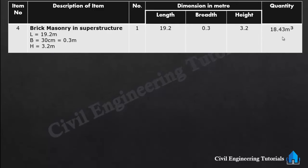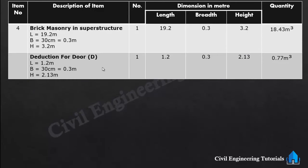This 18.43 cubic meter is the gross quantity of brick masonry in superstructure, in which the door, windows, and lintel areas are also included. To get the exact actual quantity, we need to deduct the extra quantity for door openings, window openings, and the lintel slab.